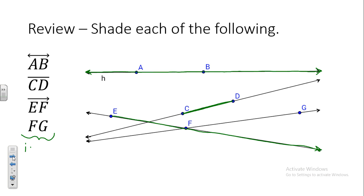Write it down so you have it in one place and remember it. F, G — two points listed side by side with no symbol — is the distance between F and G. I would need to give you a number line or a ruler to measure that distance in centimeters, inches, yards, or miles. We're looking for a measurement when we have no symbol above it.